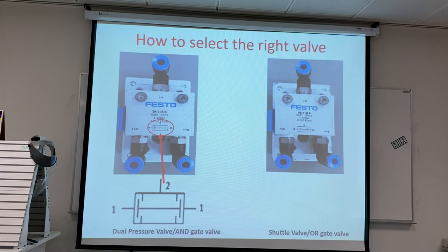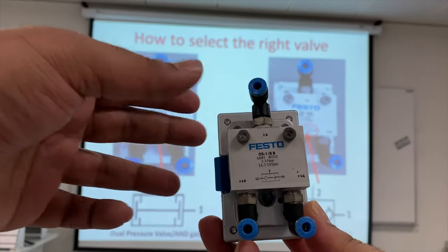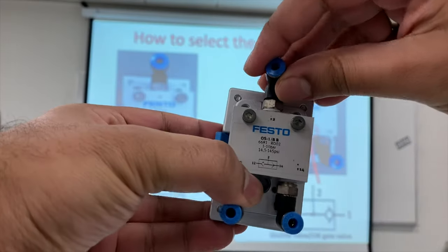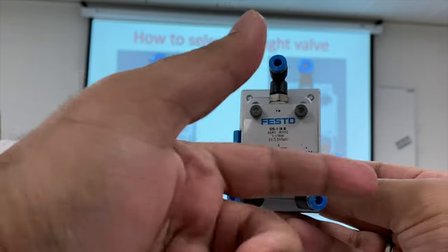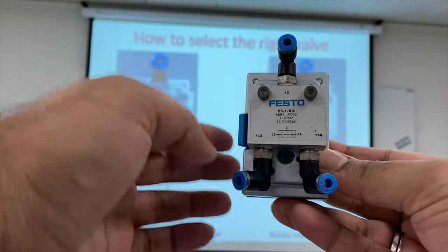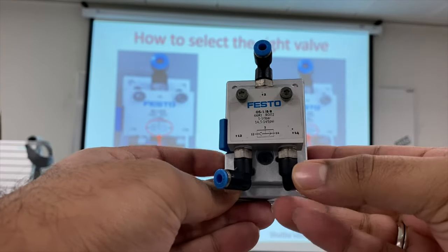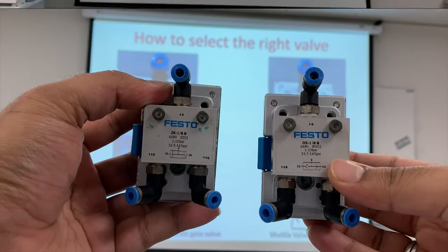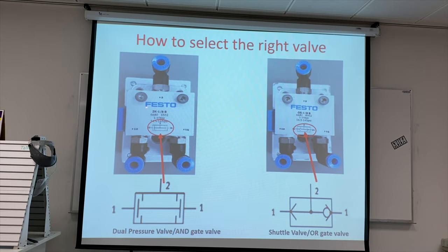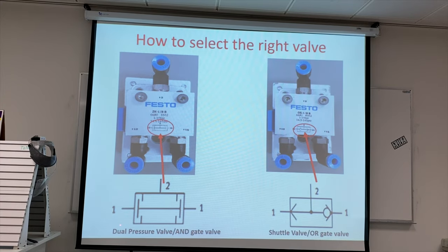Here are the symbols for both the dual pressure valve and the shuttle valve. The real shuttle valve or OR gate — port 2 is the output, with a left side and right side. If air comes in from either side or both sides, port 2 gets activated. The AND gate is used for safety situations, while the OR gate is used for emergency situations — either A or B can open. With the dual pressure valve, both push buttons must be pressed together to operate the system.